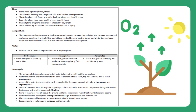Light: Plants need light for photosynthesis. The effect of day length on the growth of a plant is called photoperiodism. Short-day plants only flower when day length is shorter than 12 hours. Long-day plants need a day length of more than 12 hours. Neutral plants are not affected by day length. Some animals, e.g. moths and bats, are nocturnal — active at night.